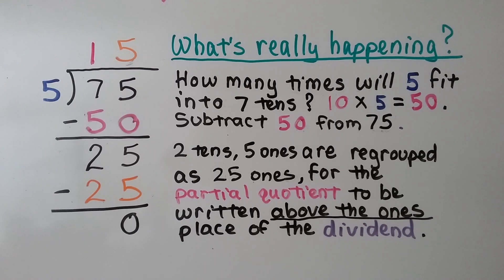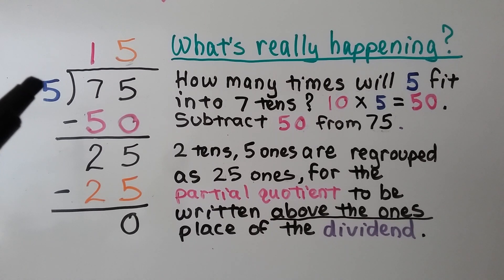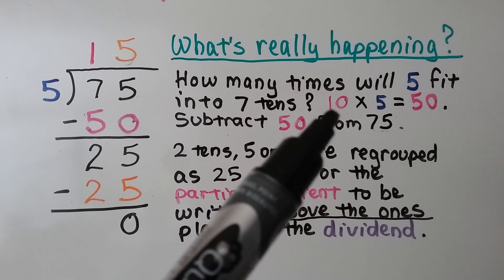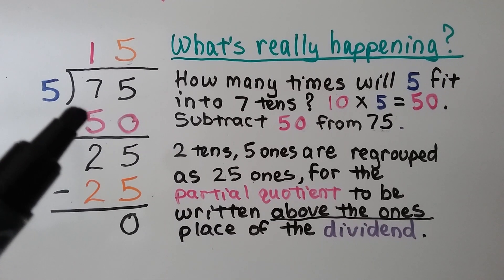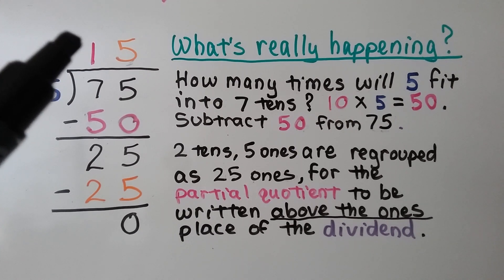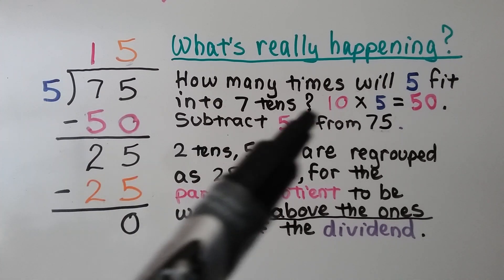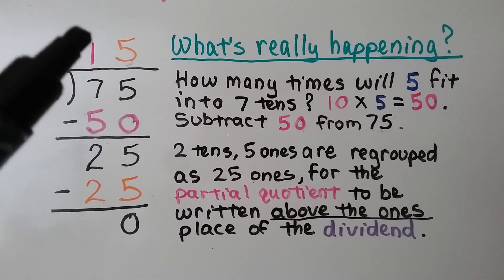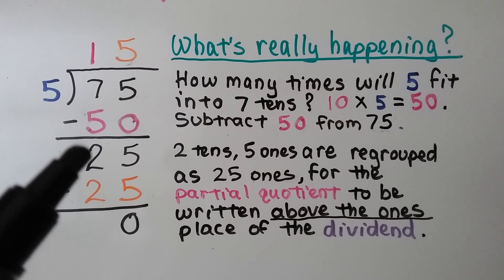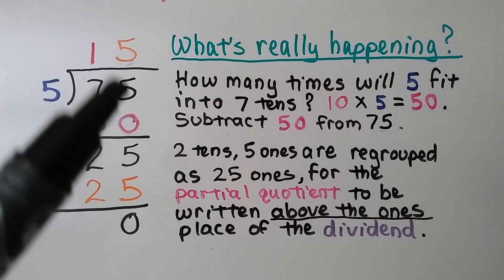So what's really happening when we do long division? We look at seventy-five divided by five and think: how many times will five fit into seven tens? Well, ten times five is equal to fifty. We subtract the fifty from the seventy-five, and we put that one ten in the tens place because we did ten times five. We do our subtraction and get twenty-five — it's two tens and five ones — and regroup as twenty-five ones, so the partial quotient can be written above the ones place.